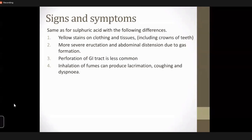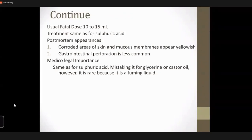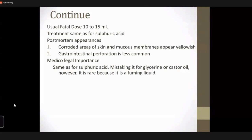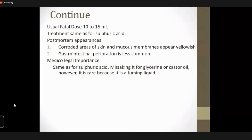Perforation does occur, but it is less common than with sulfuric acid. Compared to sulfuric acid, there will be a lot more eructation and abdominal distension due to gas formation. Because nitric acid is a fuming liquid, a lot is absorbed in the respiratory tract. When inhaled, there is irritation of the eyes, lacrimation, photophobia, cough, breathlessness, and dyspnea — symptoms more likely to be seen in nitric acid poisoning than sulfuric acid.